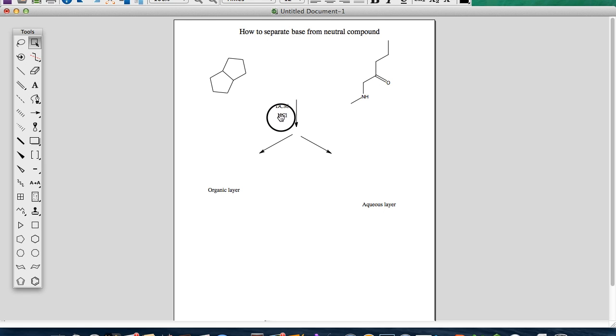The neutral compound would remain in the organic layer and the basic compound will react with the acid, turning into a salt. So we have to put two hydrogens here, and don't forget to put in the charge—it's a positive charge on the nitrogen.